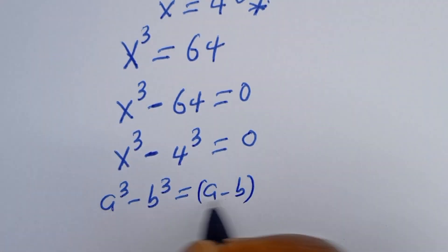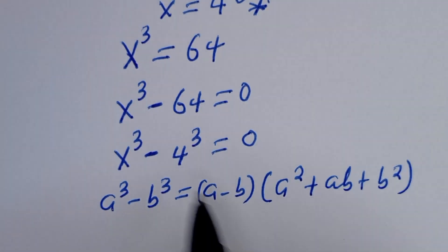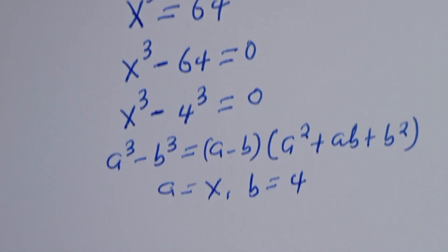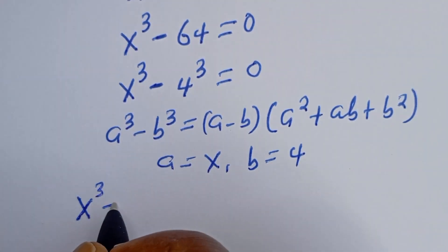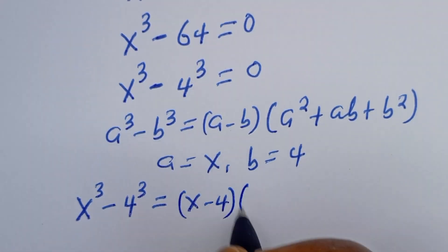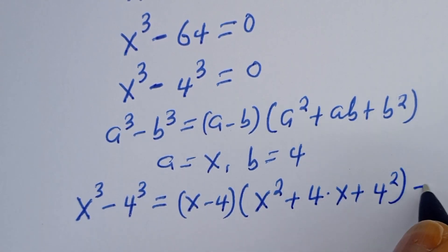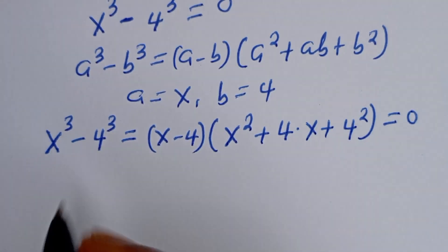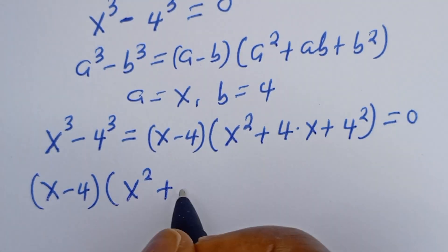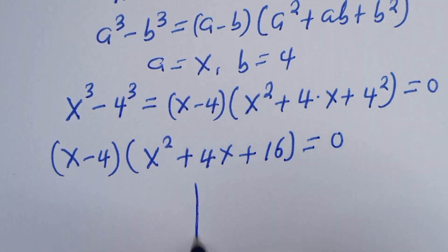Now, if you have a to the power of 3 minus b to the power of 3, this is equal to (a minus b)(a squared plus ab plus b squared). From this equation, a is equal to s and b is equal to 4. Let's substitute: we have (s to the power of 3 minus 4 to the power of 3) equals (s minus 4)(s squared plus 4s plus 4 squared), everything equal to zero.